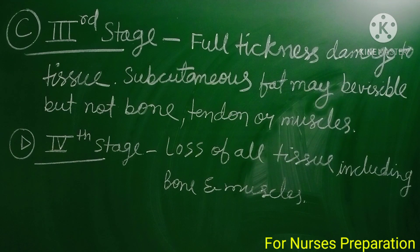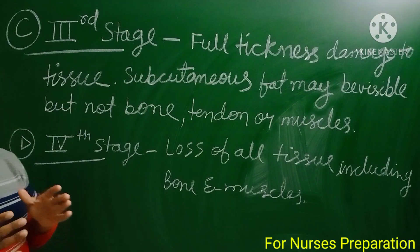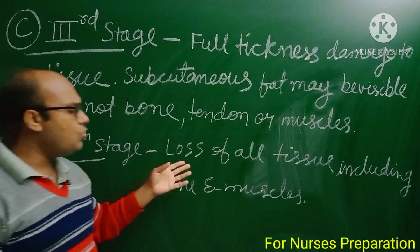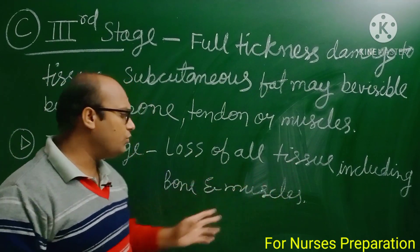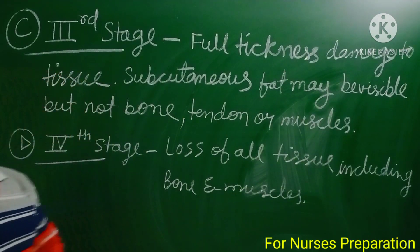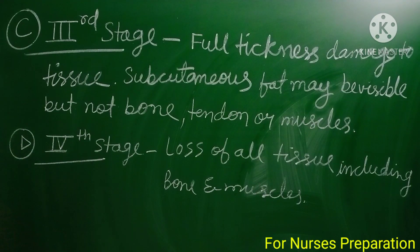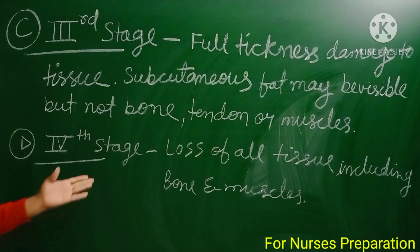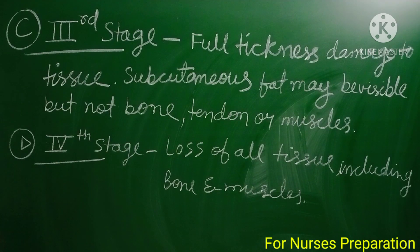Stage 4: In this stage the bedsore affects the person severely. There is loss of all tissue including bone and muscles. The wound causes complete damage to all tissues — bones become visible and muscles are also affected.